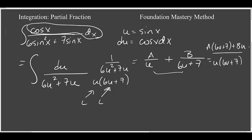Now we have two expressions that have the same denominator, which means that their numerators also have to be equal. So 1 equals a times the quantity 6u plus 7 plus b times u. And now we just need to find out what a and b are.